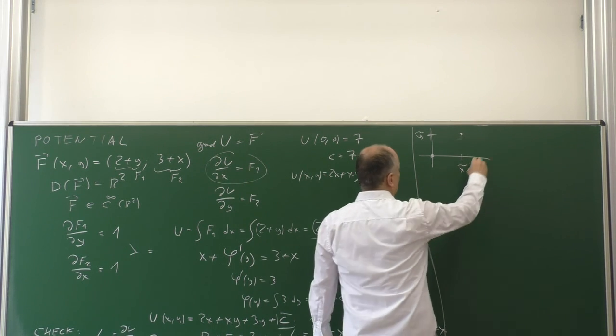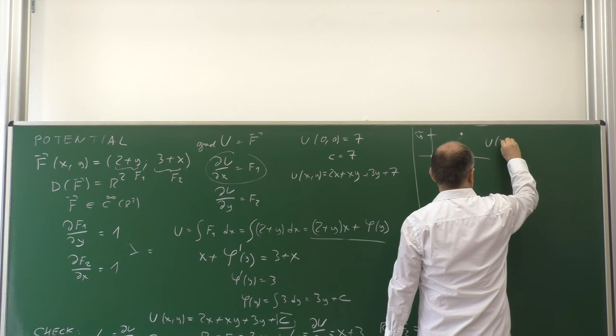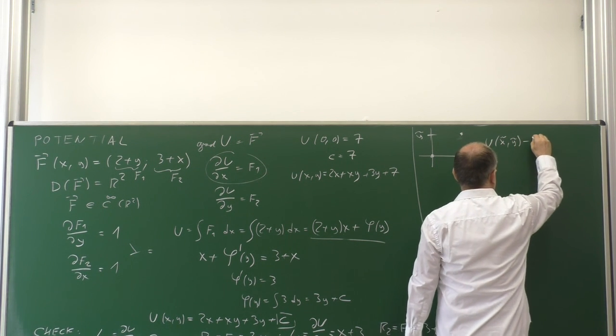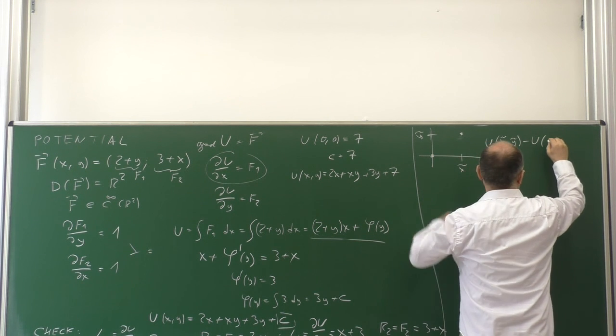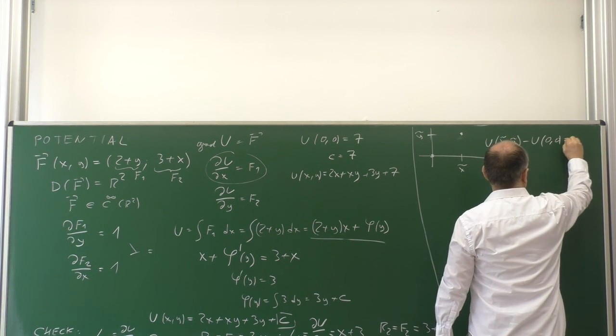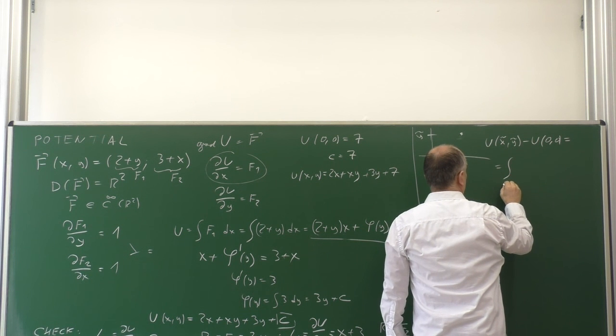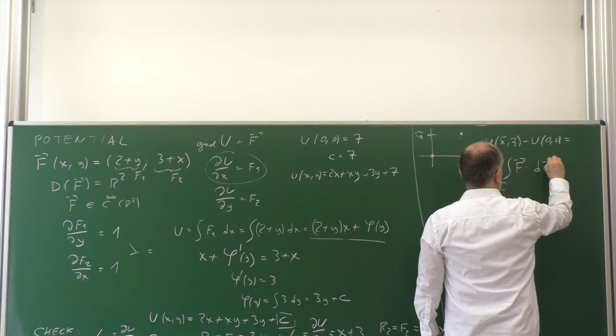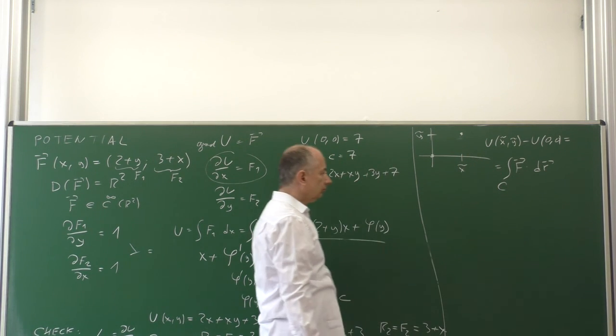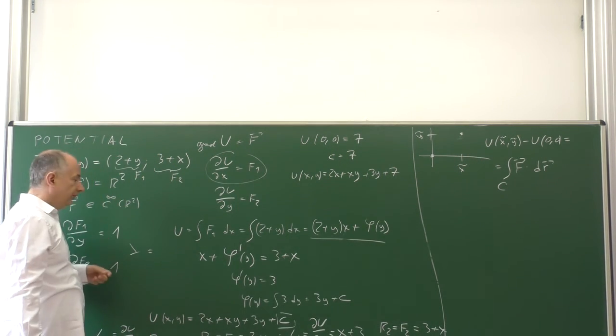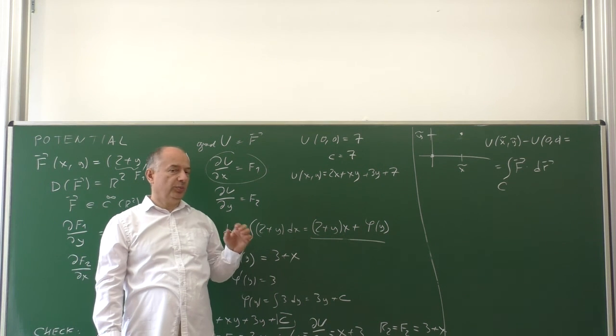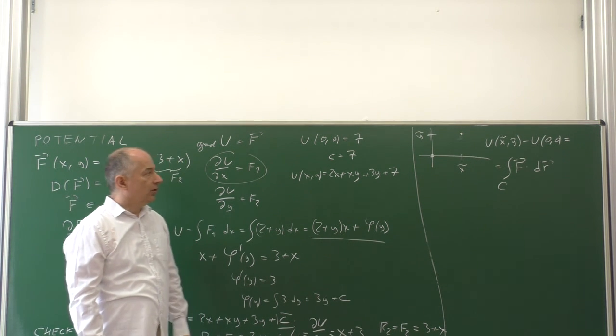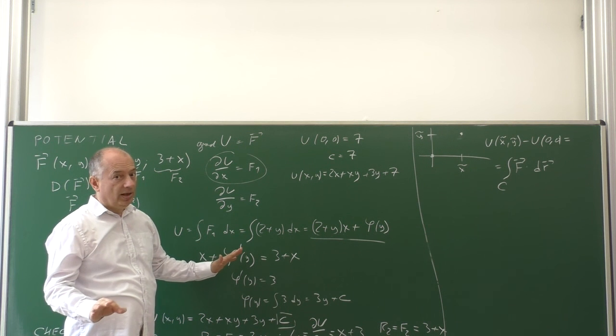The potential in this general point (x̃, ỹ) minus potential at the chosen point, say (0,0), can be found as a line integral over the curve C of the given vector field. As we know that the vector field is conservative and has potential, the integral is path independent. So, we can choose any path we like.